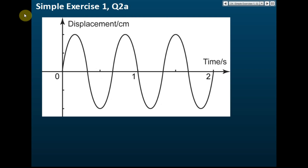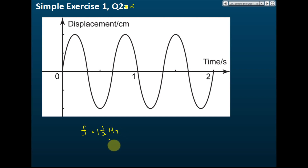For Q2d, the frequency is 1.5 Hz. From 0 to 1 second, the object makes 1 complete oscillation plus another half. So it makes 1 and a half complete oscillations in 1 second, giving a frequency of 1.5 Hz.